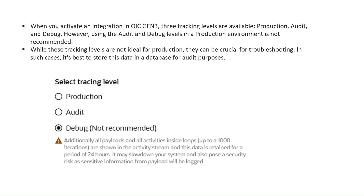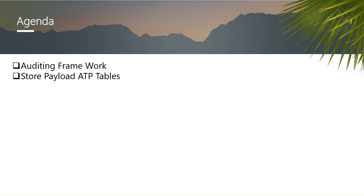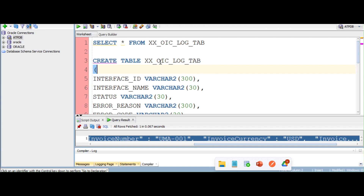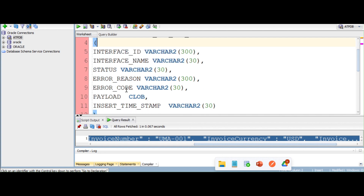When working on real-time projects for daily support and troubleshooting, this sensitive payload information is very crucial. Oracle recommends using a database audit table to capture all log information. The goal of this session is to build an acting framework to store the payload in ATP tables. We will create a REST trigger connection, send AP invoice details using stage activity, write to a virtual location, and read the payload using a package schema.